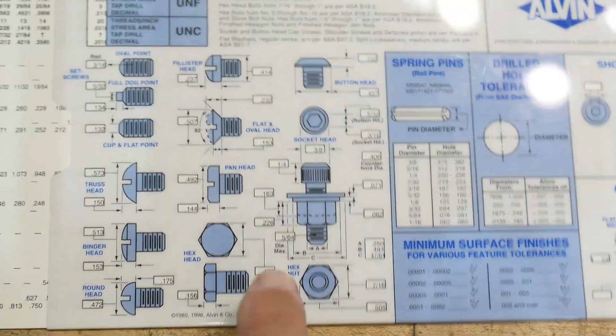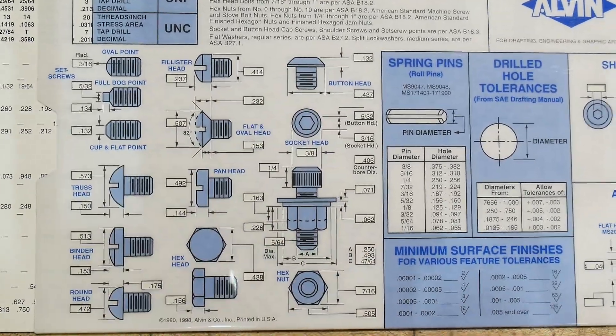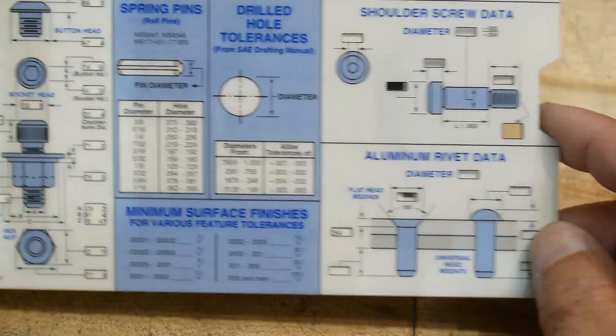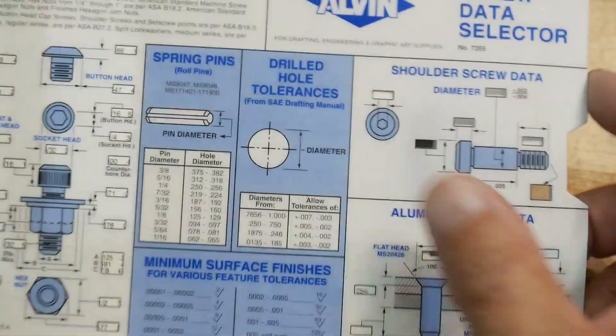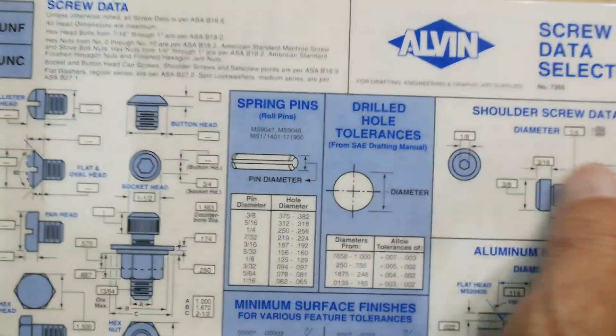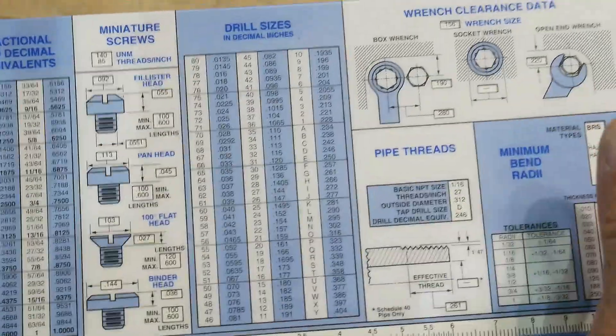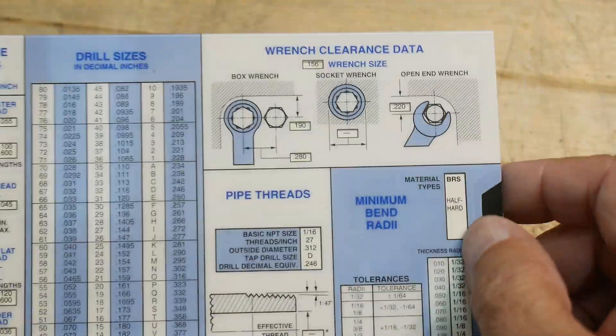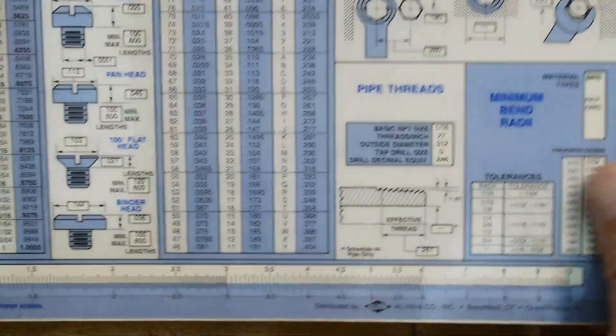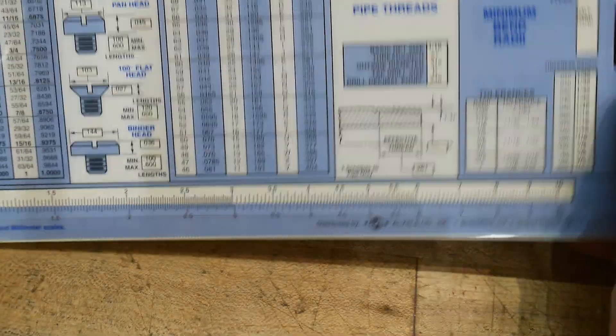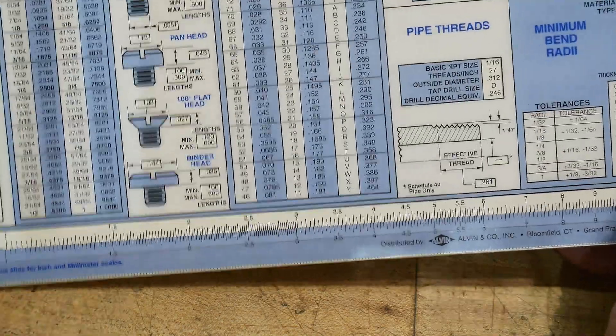It shows you dimensions for popular head sizes and things, even some rivet information, shoulder, what size hole to drill for spring pins and stuff. Here's for miniature, just room to have a wrench go in and stuff like that. This even has a little slide rule at the bottom, C and D scales, a slide rule at the bottom.